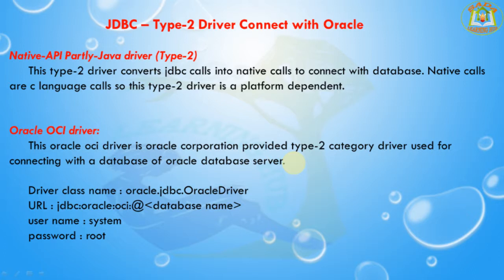The vendor-specific drivers must be installed on each client machine. If you change the database, you have to change the native APIs as it is specific to a database, and they are mostly obsolete. However, you may notice some speed increases with the Type 2 driver because it eliminates the ODBC overhead. The Oracle Call Interface (OCI) driver is an example of the Type 2 driver.